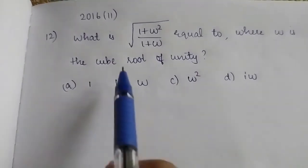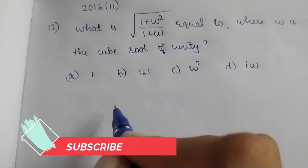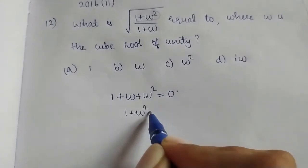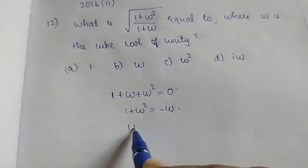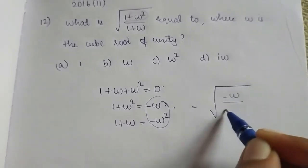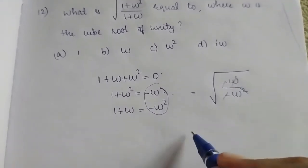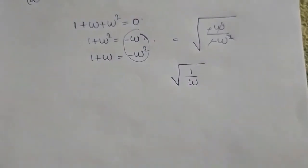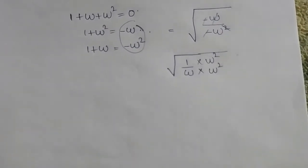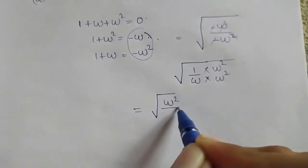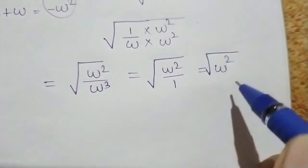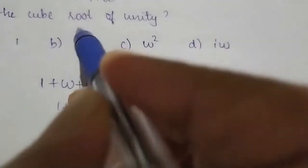Next question from 2016: find the root of 1 plus omega squared over 1 plus omega. Using the relation 1 plus omega plus omega squared equals 0, we get 1 plus omega squared equals minus omega. Also 1 plus omega equals minus omega squared. So the expression becomes root of minus omega over minus omega squared, which simplifies to root of omega squared over omega squared — wait, simplifying gives root of omega squared by 1, which equals omega. Option B is the right answer.